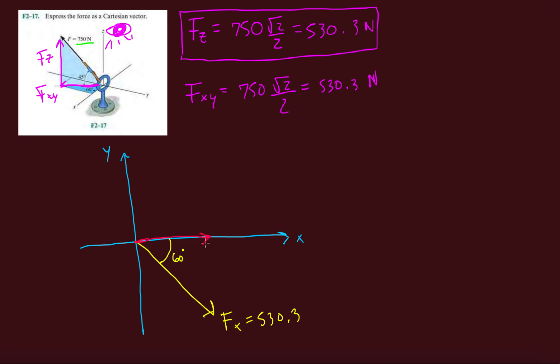And now our job is to find the two vector components that make up Fxy. So it's going to be this one which is Fx, plus our Fxy which is pointing down so it's going to be negative. So if we get those two, we're going to have Fx is 530.3.